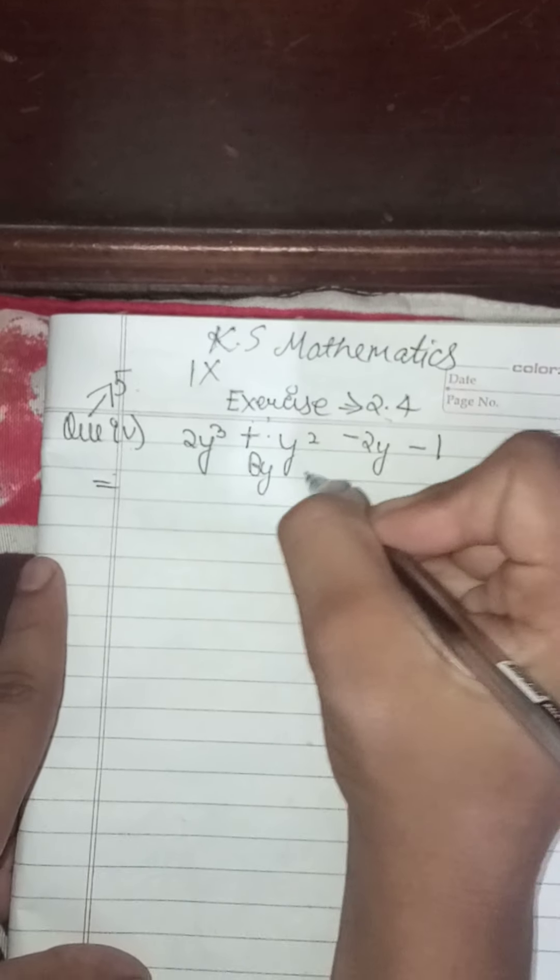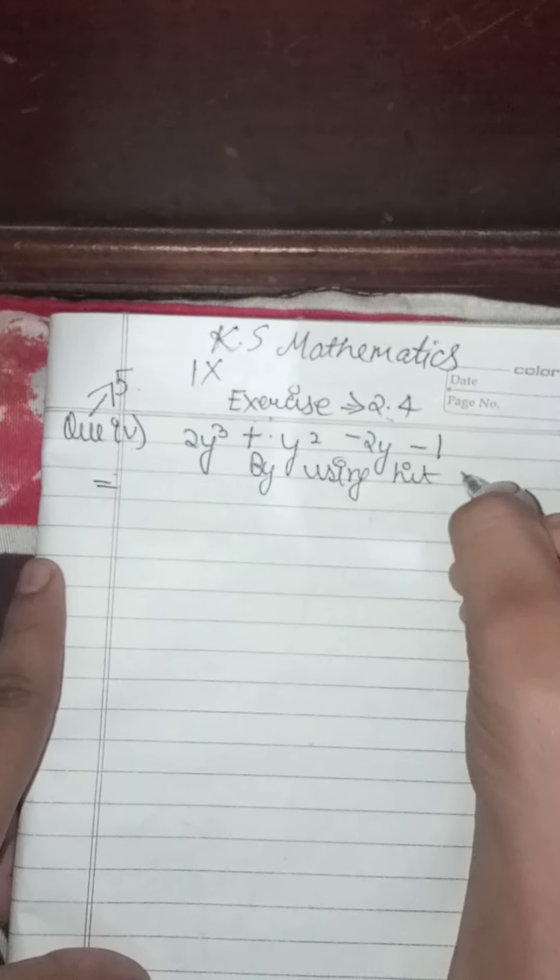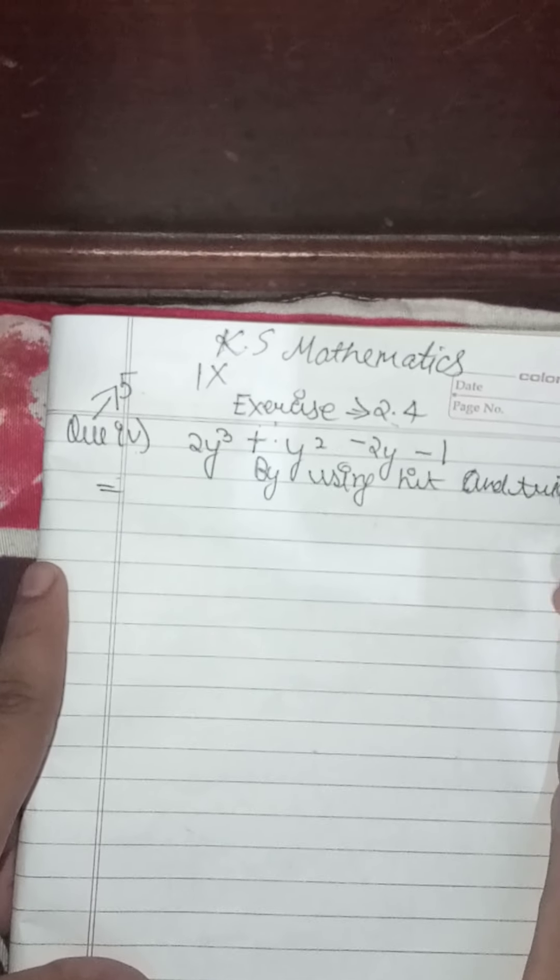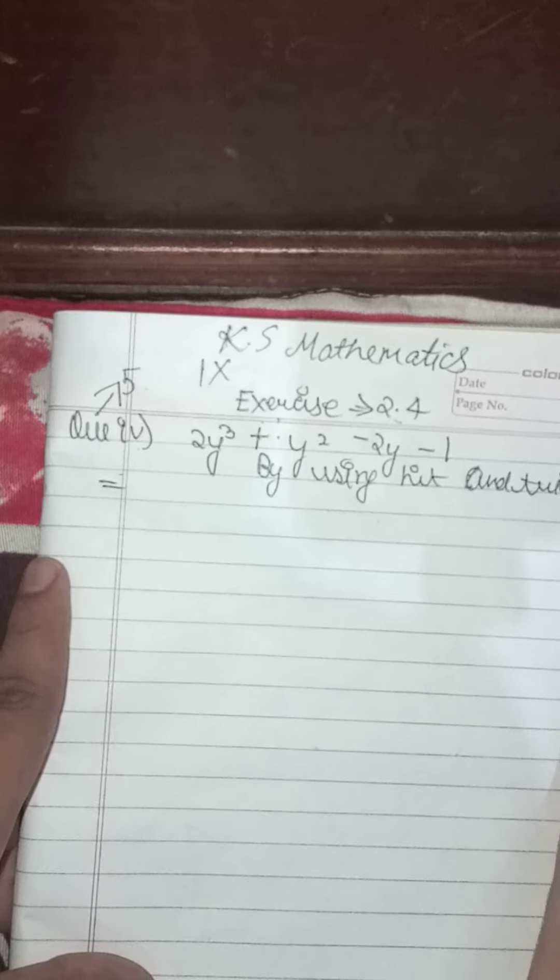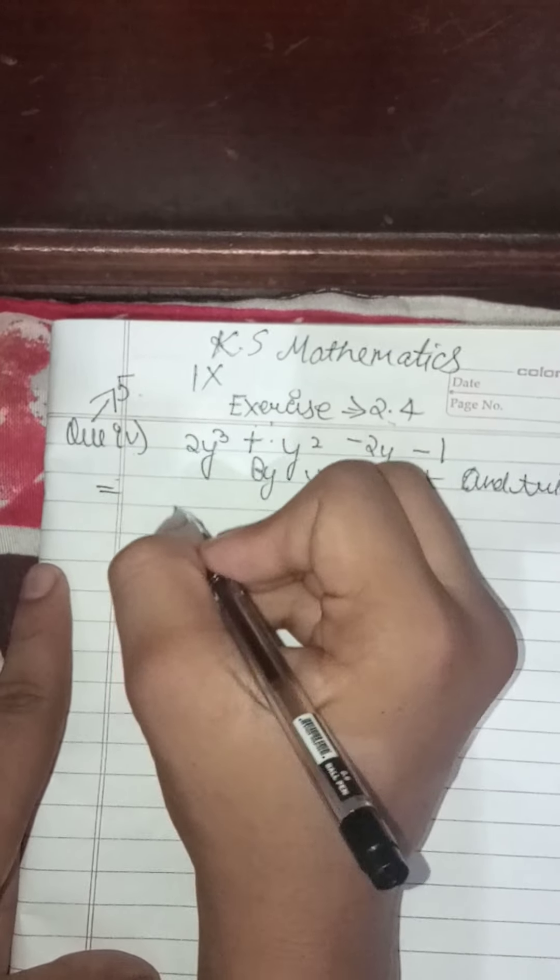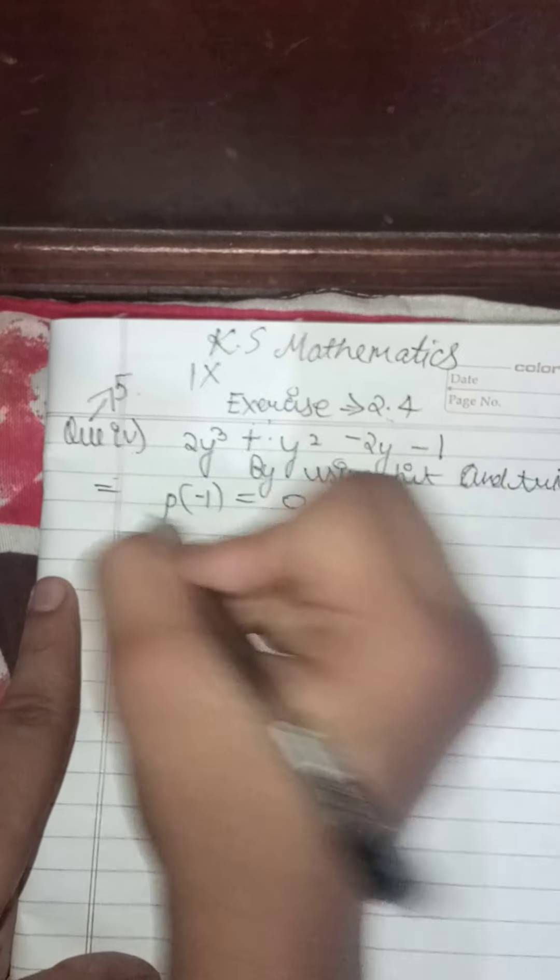By using hit and trial method, we will do this sum. We will take p equals minus 1 equals 0.